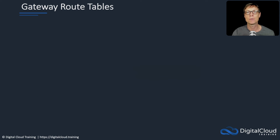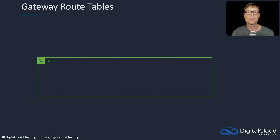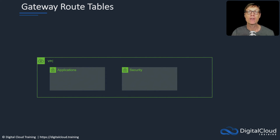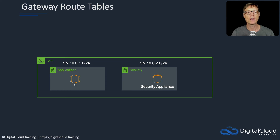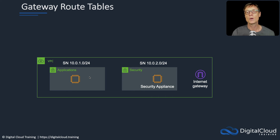The last concept I want to cover is something known as a gateway route table. We have a VPC with a couple of subnets: the subnet on the left is where we run our applications, and the subnet on the right is for a security appliance. We have an application instance, a security appliance, and an internet gateway. What we want to do is send all data to the security appliance when it's going to the internet. It could be a proxy doing web filtering, or an IDS/IPS system — some kind of security appliance that needs to be inline with your connection.